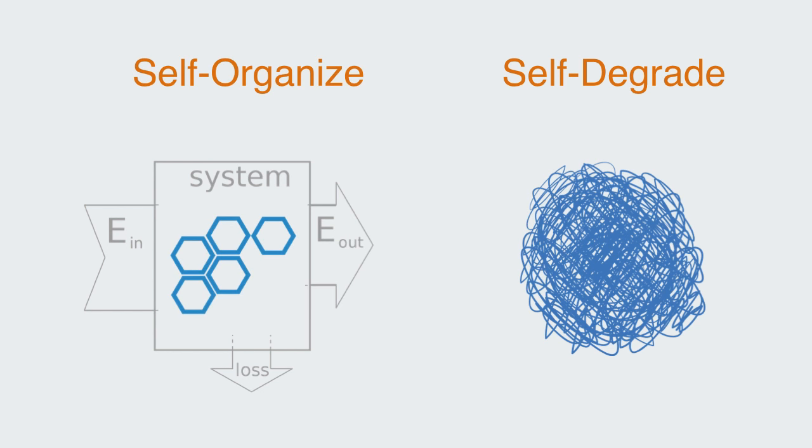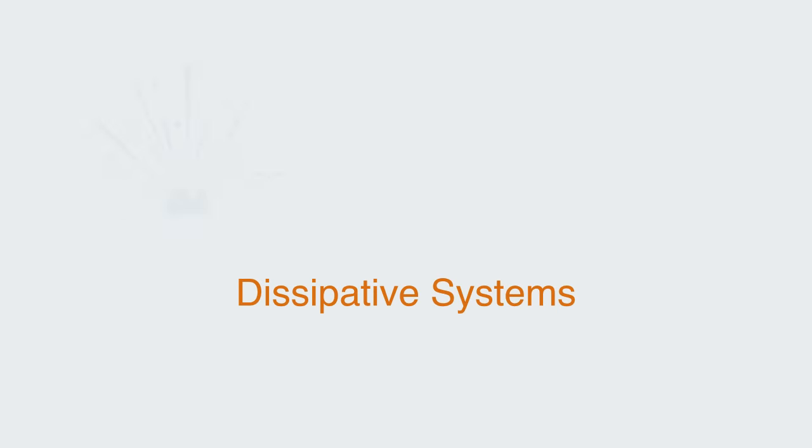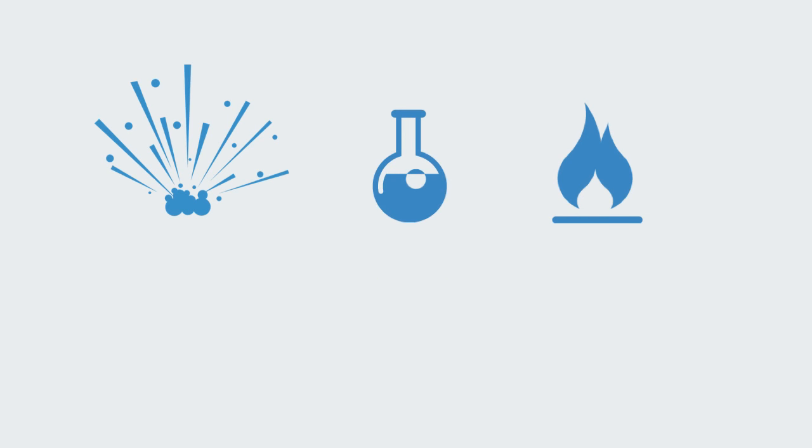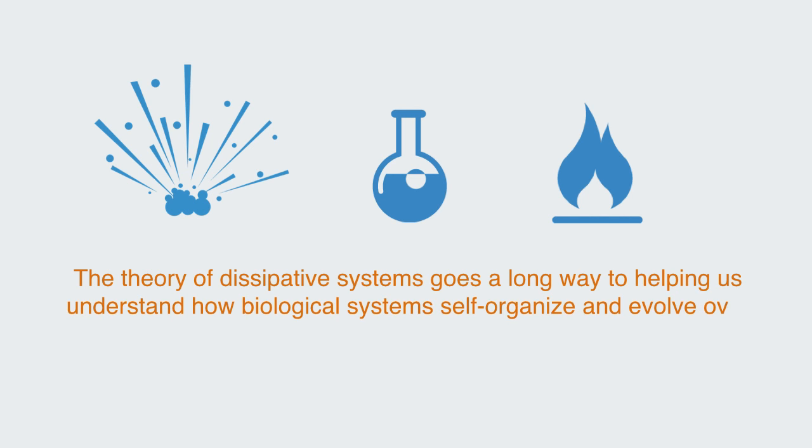Instead of self-assembling into lower energy states such as a crystal, these energy dissipating components self-organize into highly dynamic structures through which there is a constant flux of energy and materials. And this is in many ways the defining feature to life. Within chemistry this is called a dissipative system, and the theory of dissipative systems goes a long way to helping us understand how biological systems self-organize and evolve over time into more complex organizations.